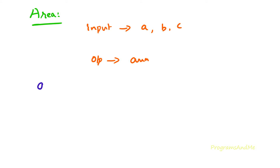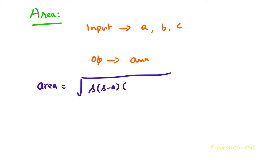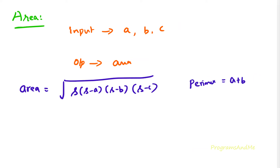The formula is: area equals the square root of s times (s minus a), (s minus b), and (s minus c). Here a, b, c are the lengths of the three sides, and s is the semi-perimeter — that is, half the perimeter. The perimeter is the length around the triangle.